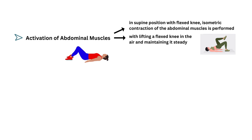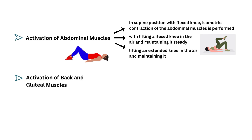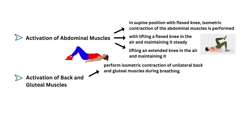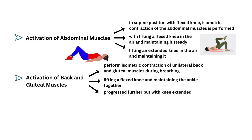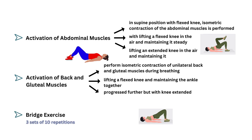The exercise can be progressed further by lifting an extended knee in the air and maintaining the back and gluteal muscles. Activation of back and gluteal muscles — in side lying, perform isometric contraction of unilateral back and gluteal muscles during breathing. The same exercise is performed with lifting a flexed knee and maintaining the ankles together and the position of the leg, and progressed further with the knee extended. Bridging exercise is also performed.